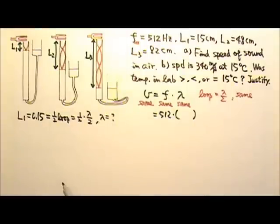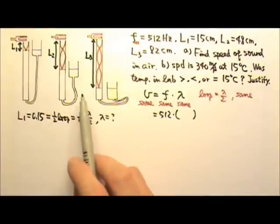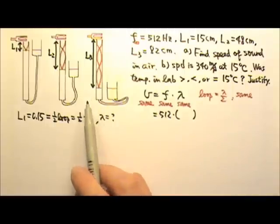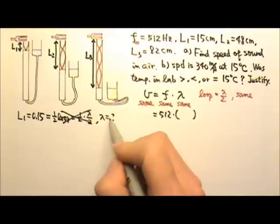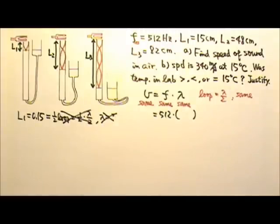But in this lab, we have other pieces of data that can give us a more accurate wavelength than this. So we're not going to do it this way. And yes, you can lose points if you do this on the AP exam.